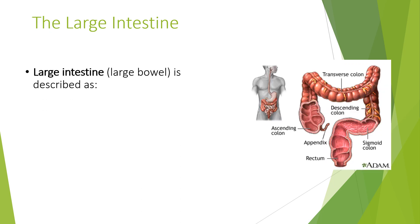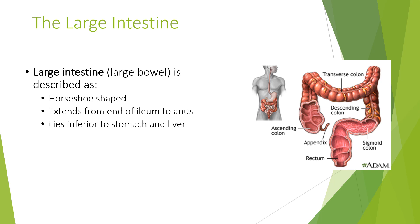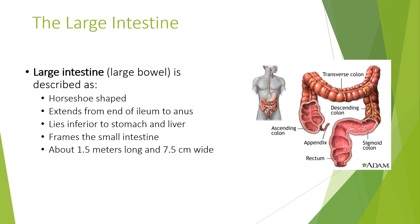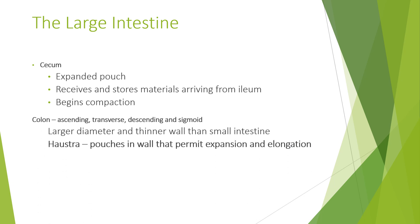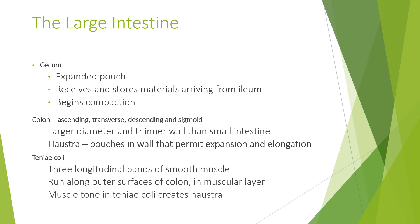The large intestine, or large bowel, is described as horseshoe shaped. It extends from the end of the ileum to the anus, lies inferior to the stomach and liver, frames the small intestine, and is about 1.5 metres long and 7.5 centimetres wide. It includes the cecum — an expanded pouch that receives and stores material arriving from the ileum and begins compaction — and the colon (ascending, transverse, descending, and sigmoid), which has a larger diameter and thinner walls than the small intestine. The haustra are pouches in the wall that permit expansion and elongation. The taenia coli are three longitudinal bands of smooth muscle running along the outer surface of the colon; their muscle tone creates the haustra.